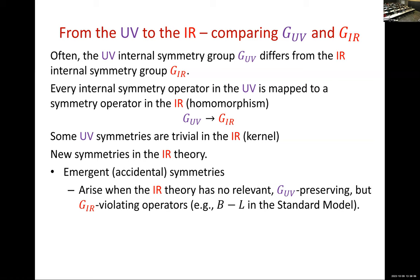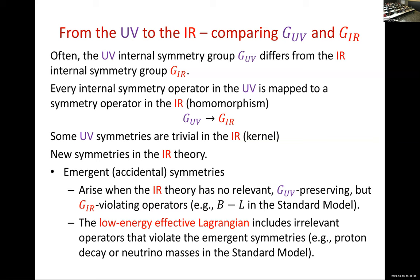A typical example is B minus L in the standard model of particle physics. B minus L is a symmetry not because there's anything sacred about it, but because all the relevant and marginal operators we can write with the fields happen to preserve that symmetry. Another aspect is that if we study the low-energy theory at slightly higher energies, we realize the symmetry is only approximate, because if you go to very high energies the symmetry is not there. When people look for proton decay or neutrino masses, they measure the coefficient of an irrelevant operator that violates the symmetry. So this symmetry is an accident — referred to as emergent symmetry — and there is no sign of it in the UV.